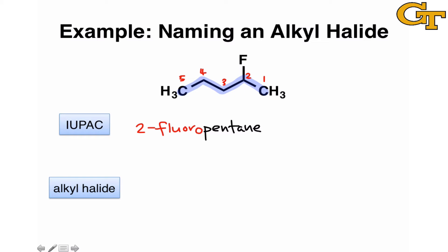There's another way to name this compound. We can think of it as a salt of a halide — even though the carbon-fluorine bond is decidedly covalent, in the old days it was common to think of this as a fluoride salt, so fluoride actually appears in the name. We name the alkyl group as a substituent coming from the fluorine, so the entire alkyl group is treated as a substituent. Since the pentyl chain is bound to the fluorine at the 2 position, this would be called 2-pentyl fluoride. This convention is far less common, but it's shown here as a point of historical interest.